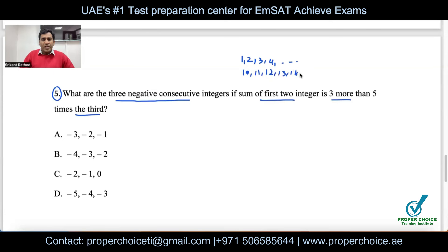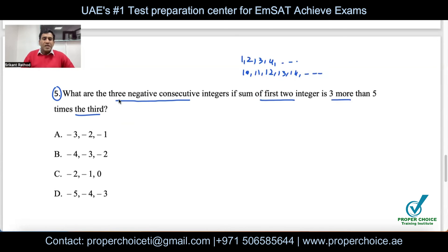Such numbers are called consecutive. The question asks for three negative consecutive integers that satisfy the given condition. Rather than guessing, represent consecutive numbers in general form.